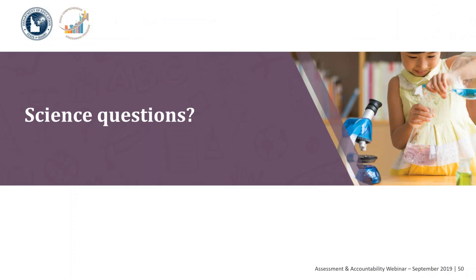A question was asked: will the alternate science assessment be changed to grade 11 in the future? The alternate science assessment will likely follow the same grade levels as the general education assessment. Additionally, the alternate science assessment will be moving away from a portfolio assessment to an online assessment similar to the ELA and math alternate assessment. Decisions will be finalized pending the board's decision on the general education science assessment, but it would likely align to the same grade levels using alternate achievement standards for students with significant cognitive disabilities. Working groups are helping to develop that science assessment for alternate assessment.